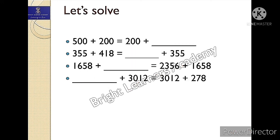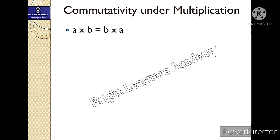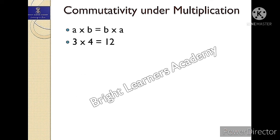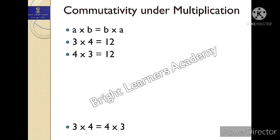Now you know the commutative property is also applicable under multiplication. How? Let's have a look. A into b is equals to b into a — just like in addition it was a plus b equals b plus a. For example, three fours are 12 and four threes are also 12. So I can say three into four is equals to four into three, because both have the same answer, which is 12.